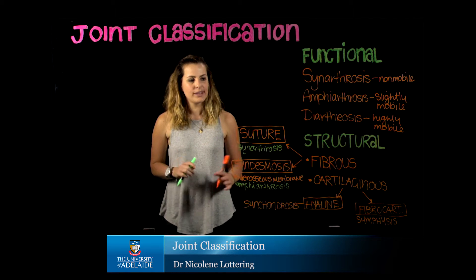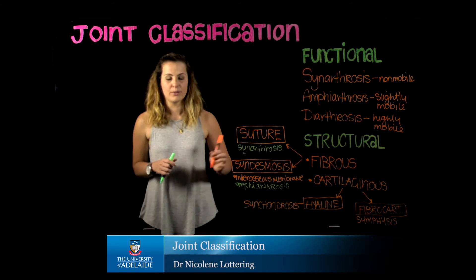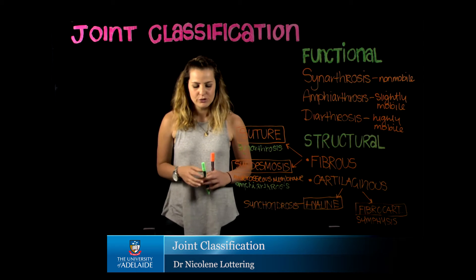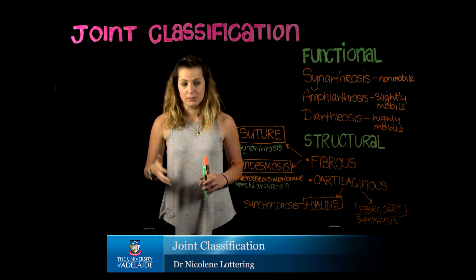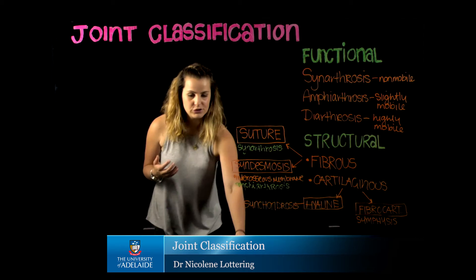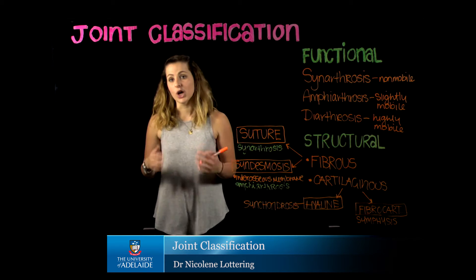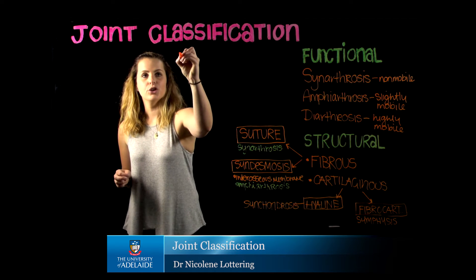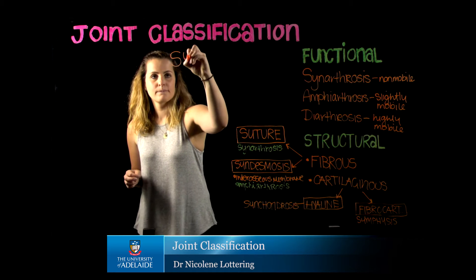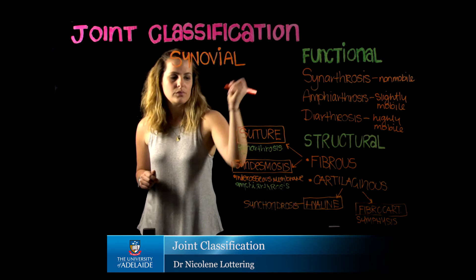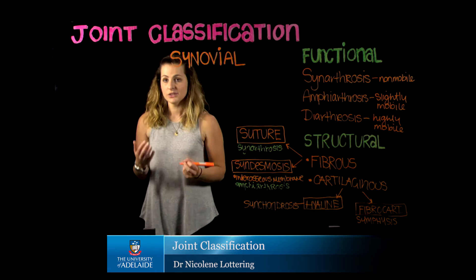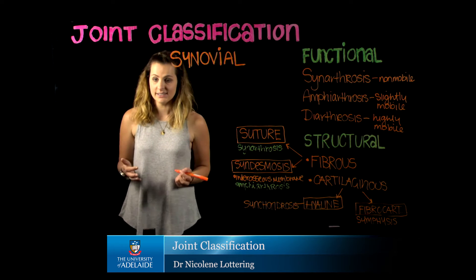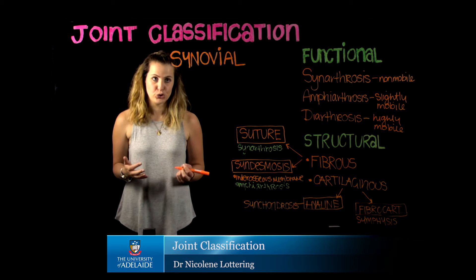The last structural type is going to be the synovial joints. Our synovial joints are going to be the most common joints. The interface associated with synovial joints is going to be ligaments. With synovial joints specifically, there are six different types or classes of synovial joint that I expect you to know.